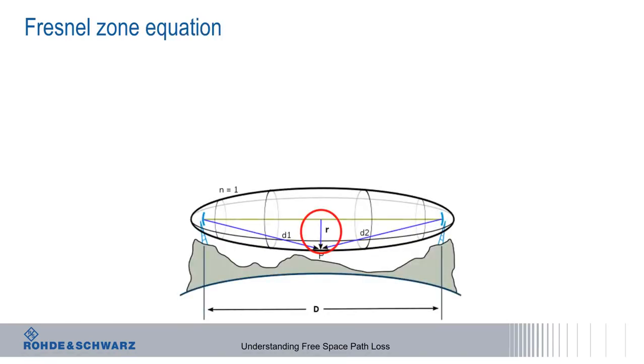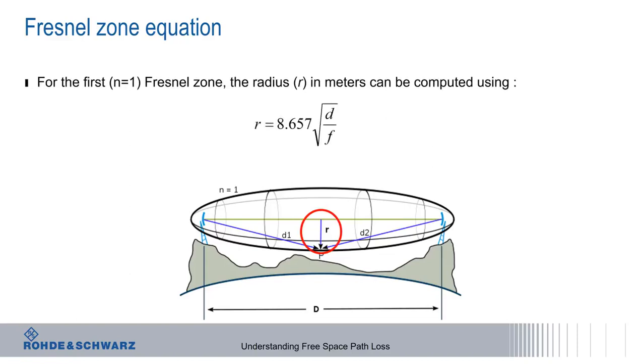The radius, r, of the first Fresnel zone can be calculated as a function of distance and frequency, using r equals 8.657 times the square root of d over f, where d is distance in kilometers and f is frequency in gigahertz.